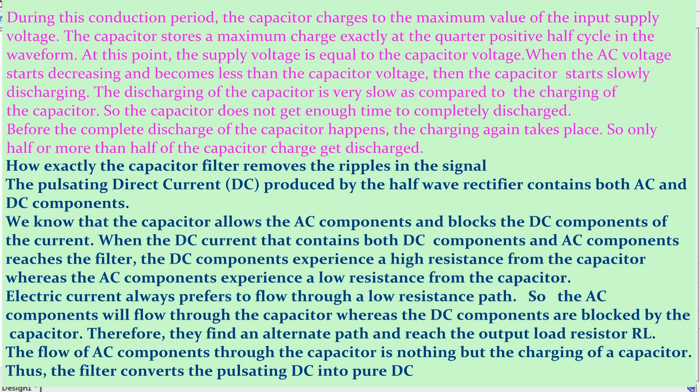The capacitor stores maximum charge exactly at the quarter positive half-cycle in the waveform. At this point, the supply voltage is equal to the capacitor voltage. When the AC voltage starts decreasing and becomes less than the capacitor voltage, the capacitor starts slowly discharging. The discharging of the capacitor is very slow compared to its charging, so the capacitor does not get enough time to completely discharge. Before complete discharge happens, charging takes place again, so only half or more than half of the capacitor charge gets discharged.